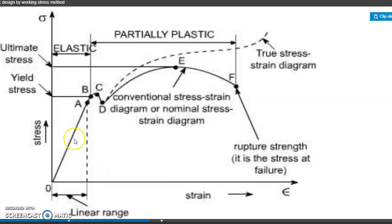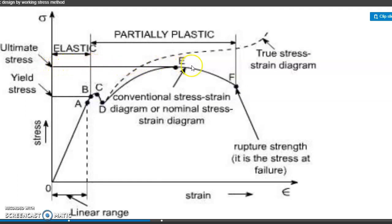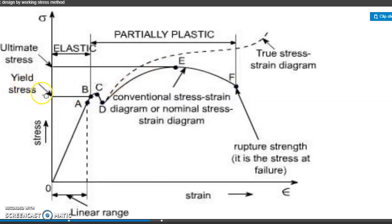The diagram shows the strain on the x-axis; the linear range lies between 0 and the dotted line, which is called the elastic range. The strain symbol is denoted as epsilon (E) and the stress symbol is denoted as sigma. The ultimate stress line is connected at point A on the conventional stress-strain diagram, and the L stress is connected at point B.